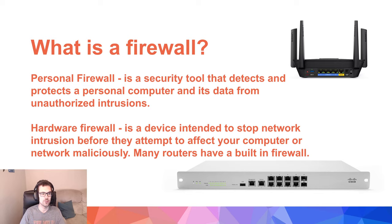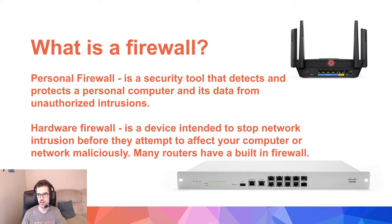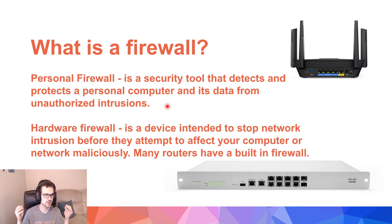Let's start with what is a firewall. There are two types of firewalls. One is kind of like a router — it has a built-in blockage to it. It's the first line of defense when you get to your house, and we call that a personal firewall. It's a security tool that detects and protects the personal computer and its data from unauthorized intrusions. There are also additional devices you can buy that connect with your router and provide another layer of protection.